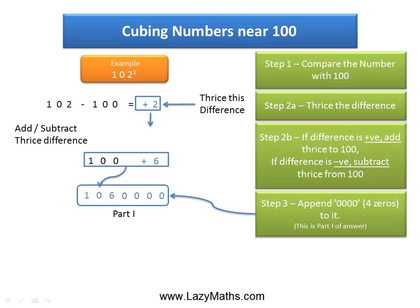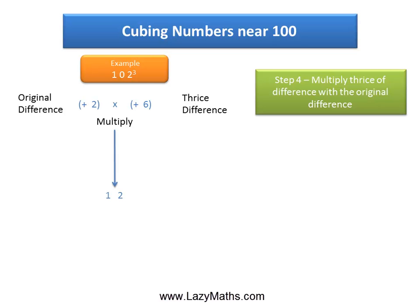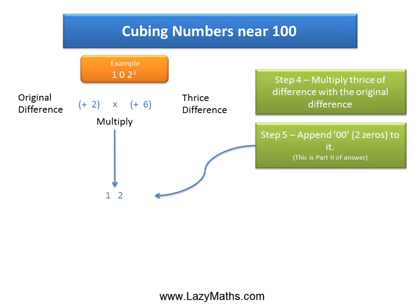Now let's look at how to get part 2 of the answer. Part 2 for 102 cubed involves going back to the original difference, which is plus 2, and then using thrice the difference, which is plus 6. Multiply the original difference and thrice the difference together: positive 2 times positive 6 equals positive 12. Take 12, multiply by 100, and we get 1,200 — this becomes part 2 of the answer.